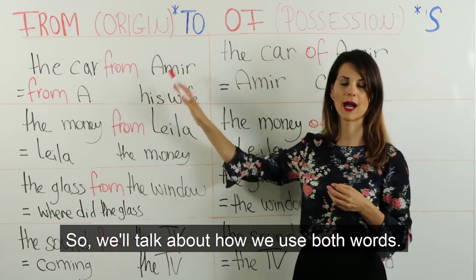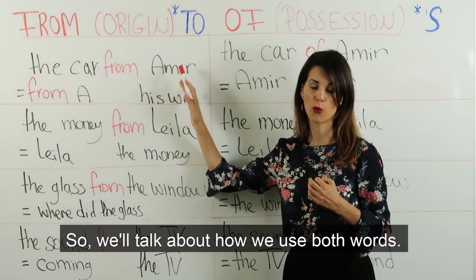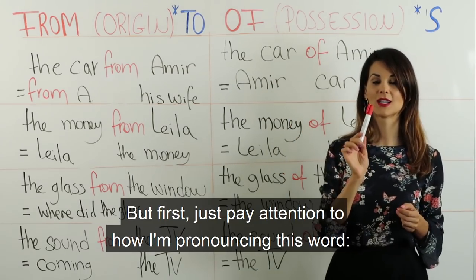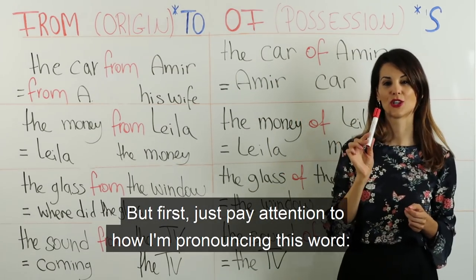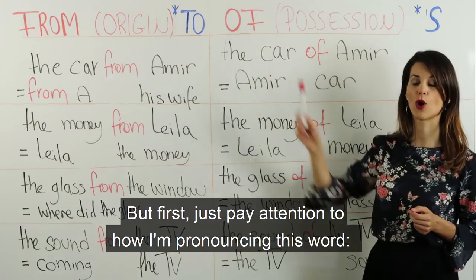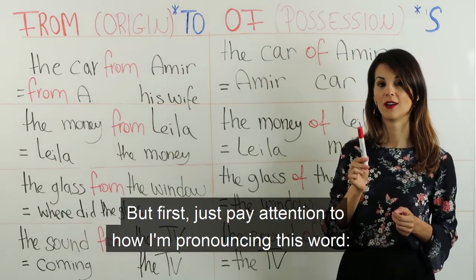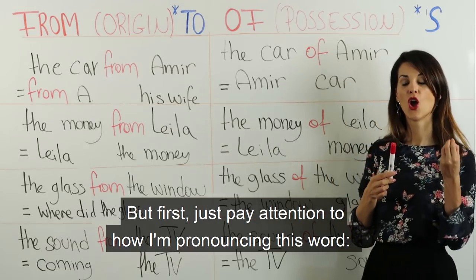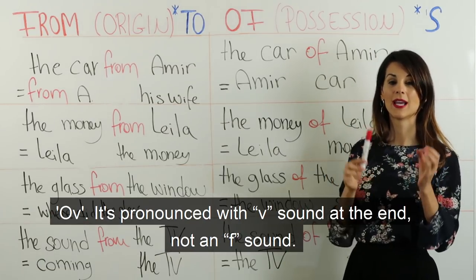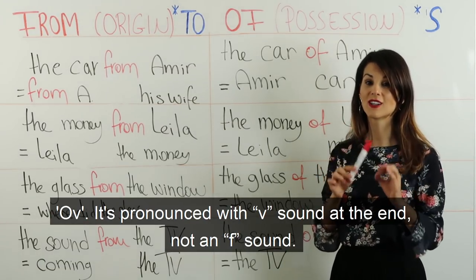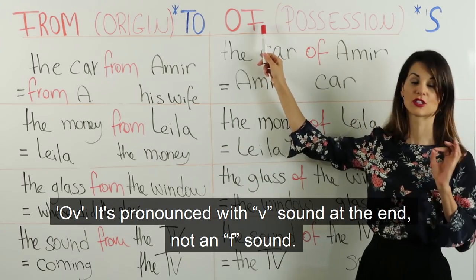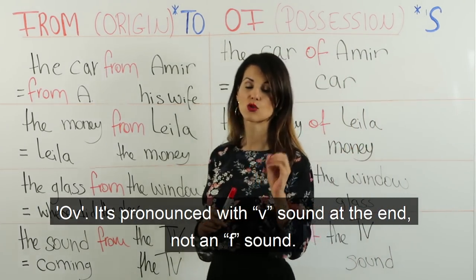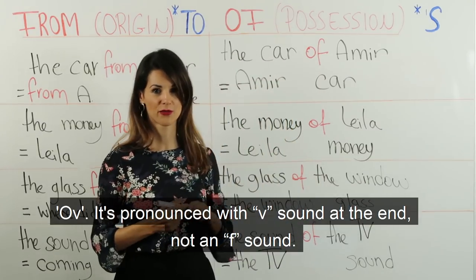So we'll talk about how we use both words. فراح نحكي عن كيف منستعمل الكلمتين. But first, just pay attention to how I'm pronouncing this word: 'of'. انتبهوا كيف أمنتقى هالكلمة؟ Of — it's pronounced with a V sound at the end, not an F sound. منتقيها مع صوت V مش مع صوت F، مع أنه مكتوب بحرف الـ F.